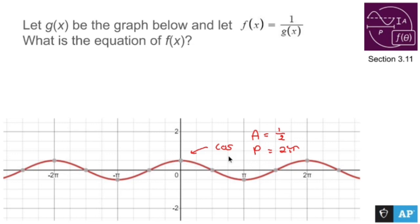So g of x is going to be half cosine x. They want me to find f of x which is 1 over g of x, so f of x is going to be 1 over half of cosine x.